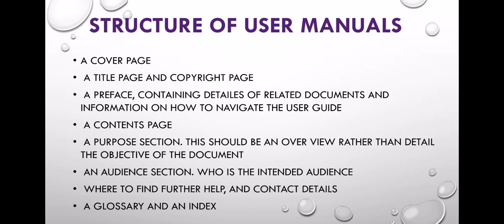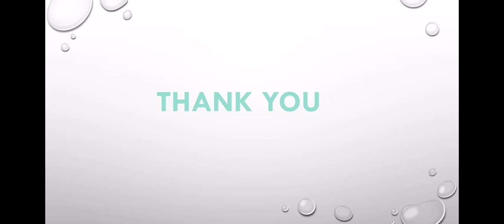User manuals include a cover page, a title page and copyright page, a preface containing details of related documents and information on how to navigate the user guide, a purpose section giving an overview of the document's objective, an audience section identifying the intended audience, a glossary, and an index with contact details.